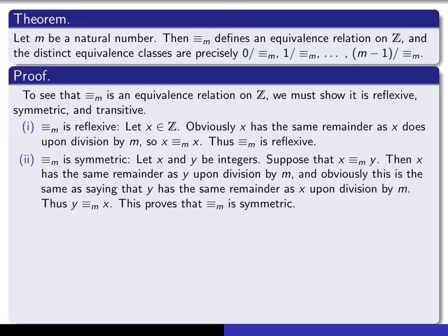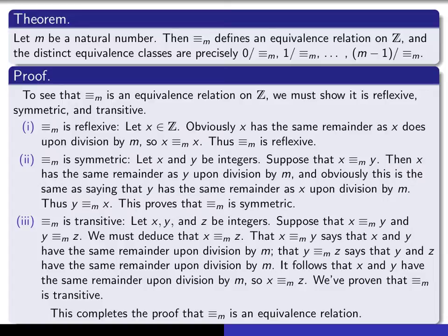For transitivity: give yourself three integers and assume the first is related to the second, and the second is related to the third; you have to show the first is related to the third. The first assumption says x and y have the same remainder upon division by m; the second says y and z have the same remainder. Therefore x and z must have the same remainder, since they both share the same remainder as y. That proves x is related to z, and the relation is transitive. This completes the proof that the relation is an equivalence relation.